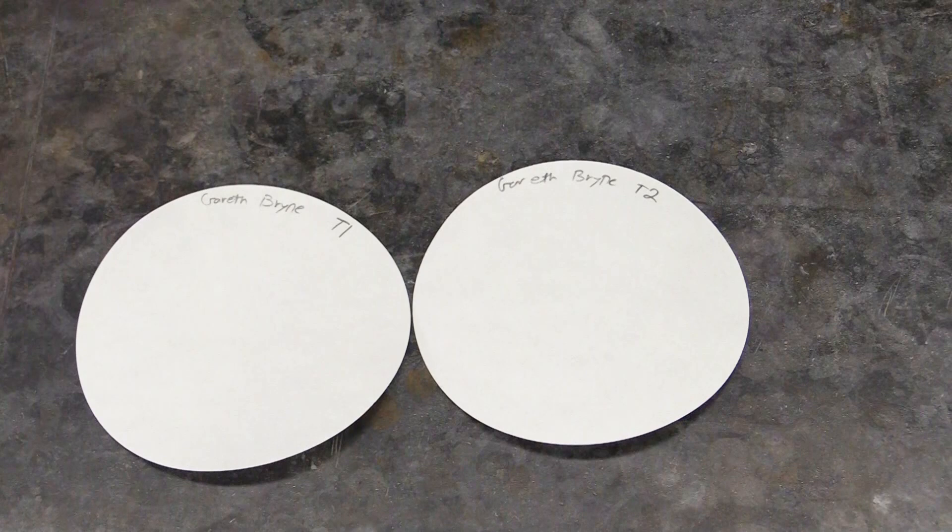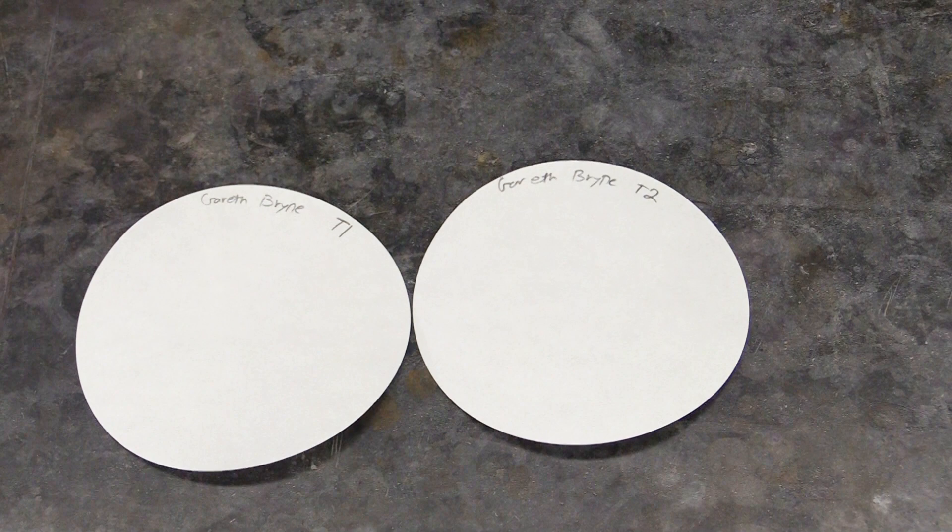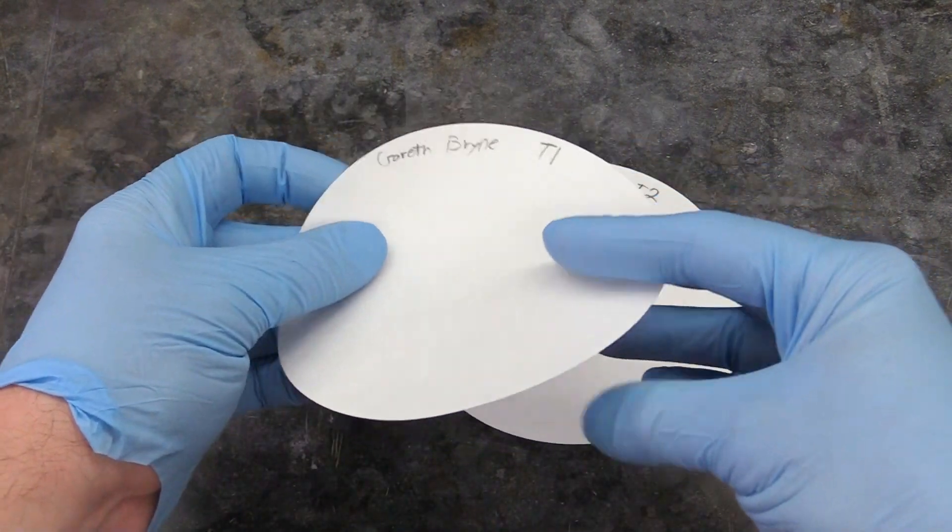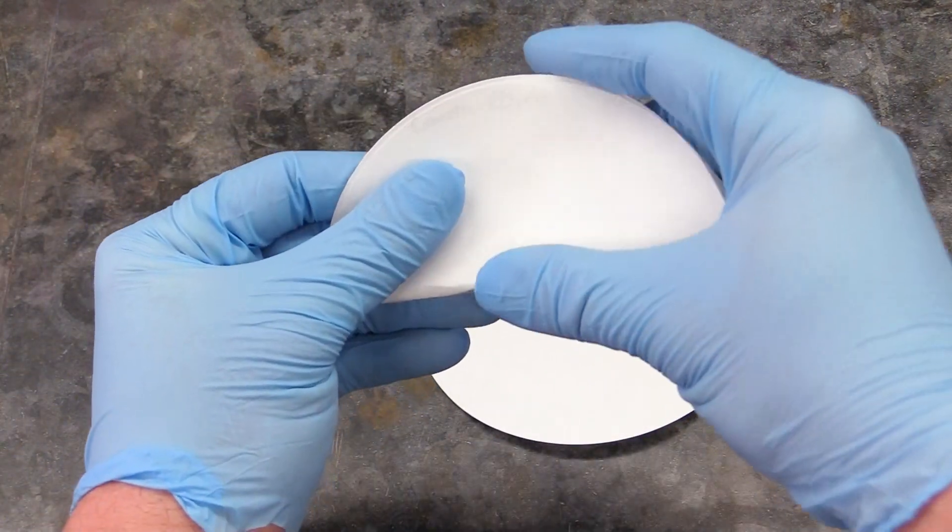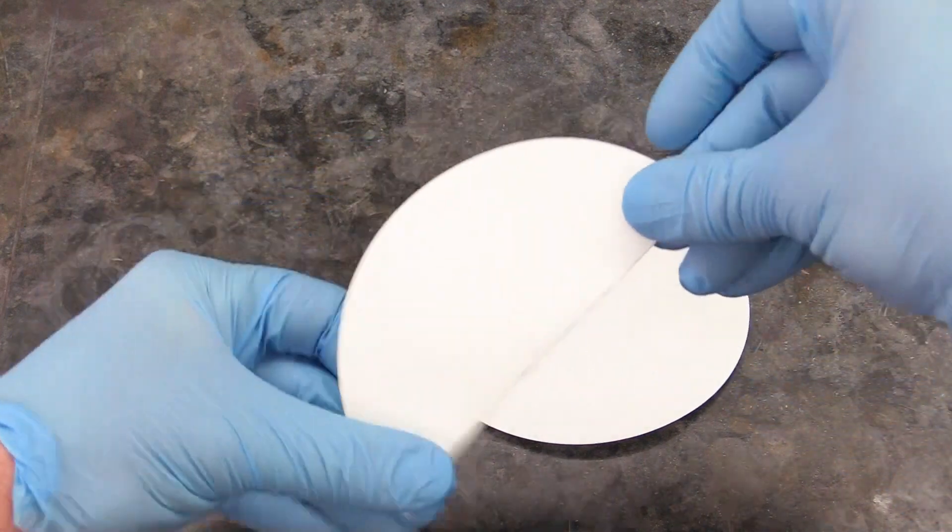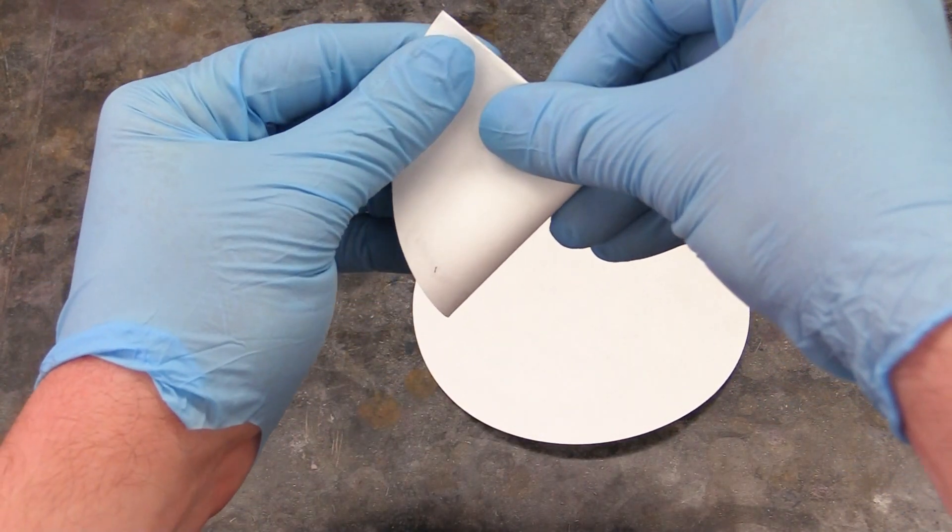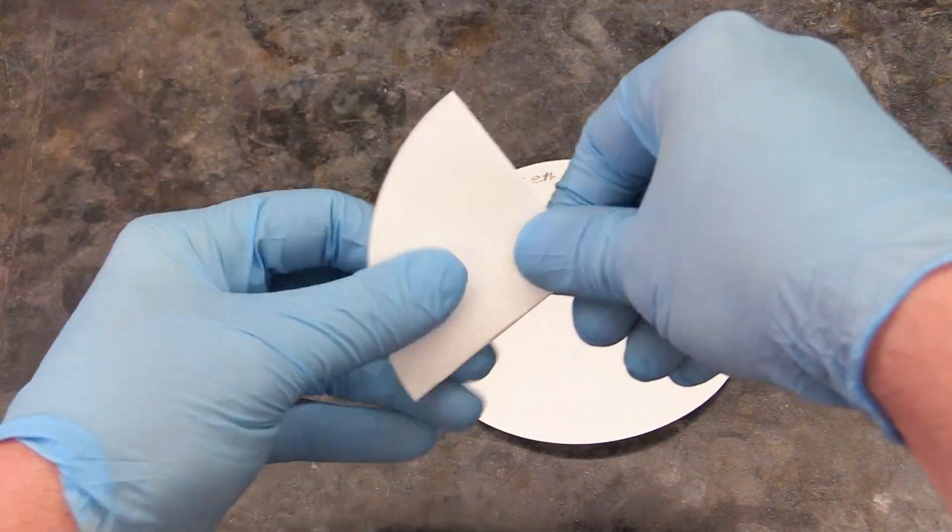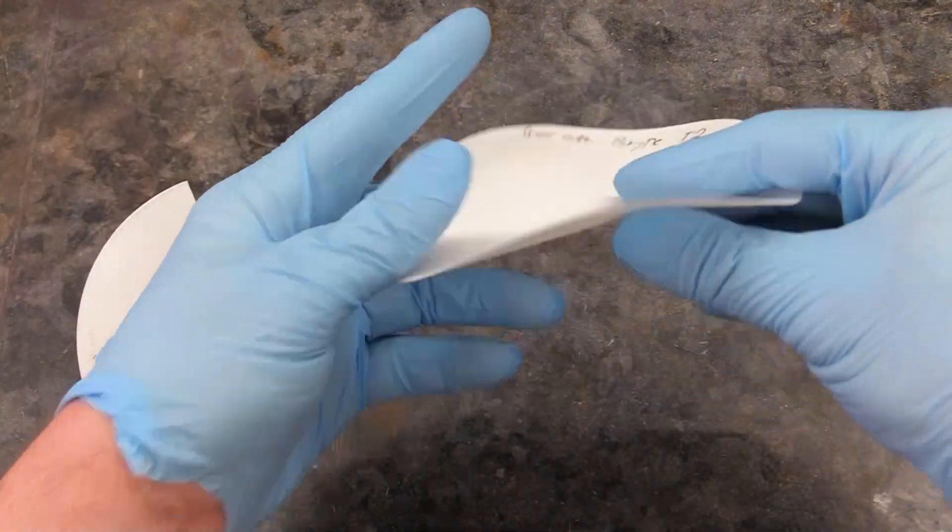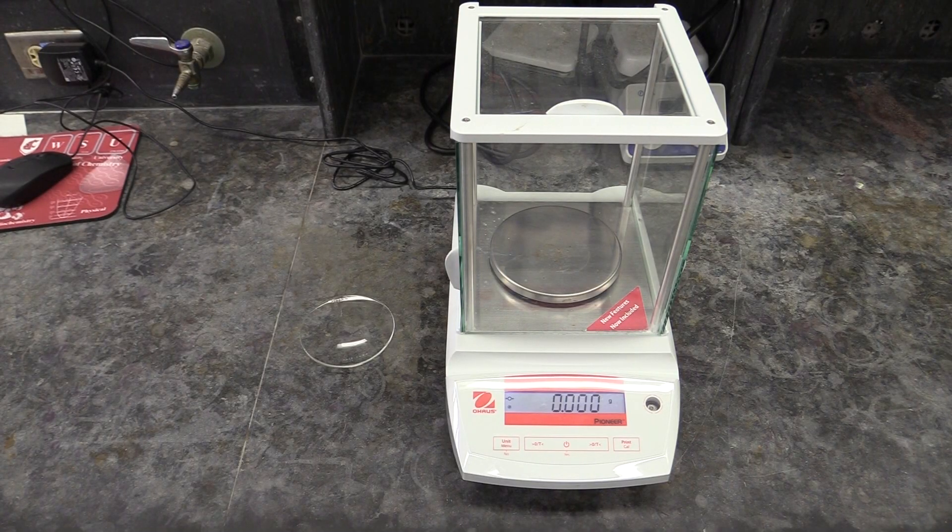Once your mixtures have finished heating and you've set them some place to cool, you can get some filter papers ready to filter the precipitates out. Label each paper in pencil so you know which paper goes with which trial, then fold them in half and half again to turn them into quarter circles. When you open the end with the curve on one of these up, it will make a cone.